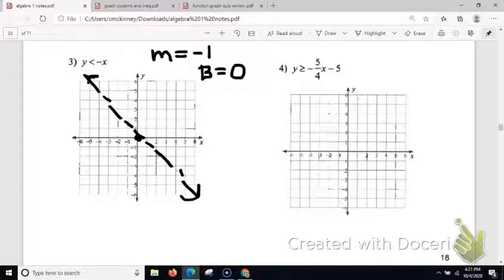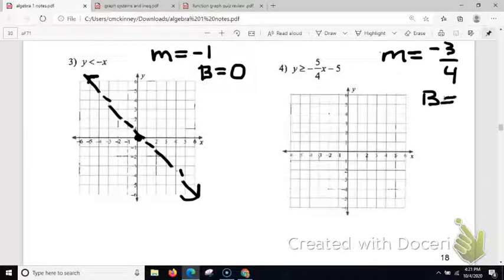So next one, you don't necessarily have to write down what your m and your b are. But I'm going to write that down for now, just to remind us. And hopefully, again, after last unit, that is familiar. So start at negative 5. So that's down here, almost to the bottom. And my slope is negative 5 fourths. Not negative 3 fourths. Negative 5 fourths.